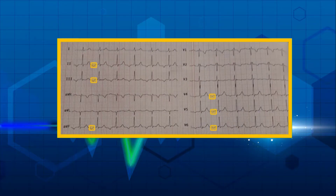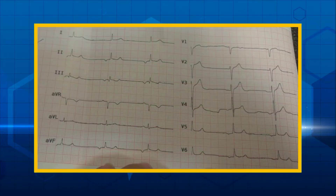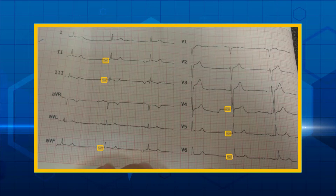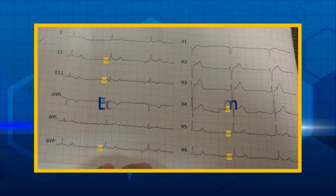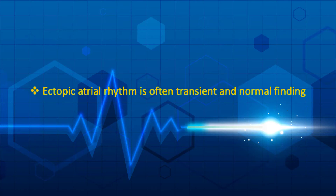In the next example, the P waves are inverted in D2, D3, AVF, V4 to V6, and upright in AVR — therefore the P waves are non-sinus and from the low atrium. The heart rate is nearly 90 beats per minute, so this is low atrial rhythm. In the following example, the strip shows the same pattern: P waves inverted in D2, D3, AVF, V4 to V6, and upright in AVR, with a heart rate of nearly 57 beats per minute — also low atrial rhythm.